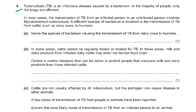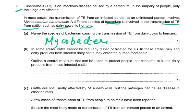Question number 5: Tuberculosis is an infectious disease caused by a bacterium. In most cases, transmission of TB from an infected person involves Mycobacterium tuberculosis. A different species is involved in transmission from cattle such as dairy cows to humans. Name the species: Mycobacterium bovis — or M. bovis, which Cambridge also accepted.